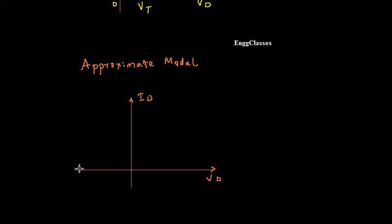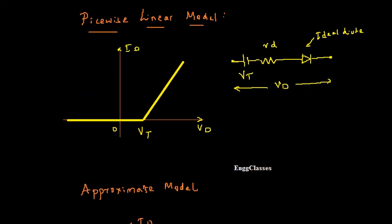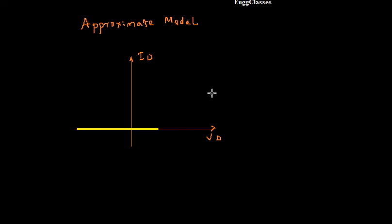For the approximate model: till Vt, the knee voltage, the diode does not conduct so the current is zero. Once the diode starts conducting, the dynamic resistance is zero. In the piecewise linear model there was some resistance so the line had a slope; now with no resistance, the line becomes vertical. That is how the approximate model VI characteristics look.